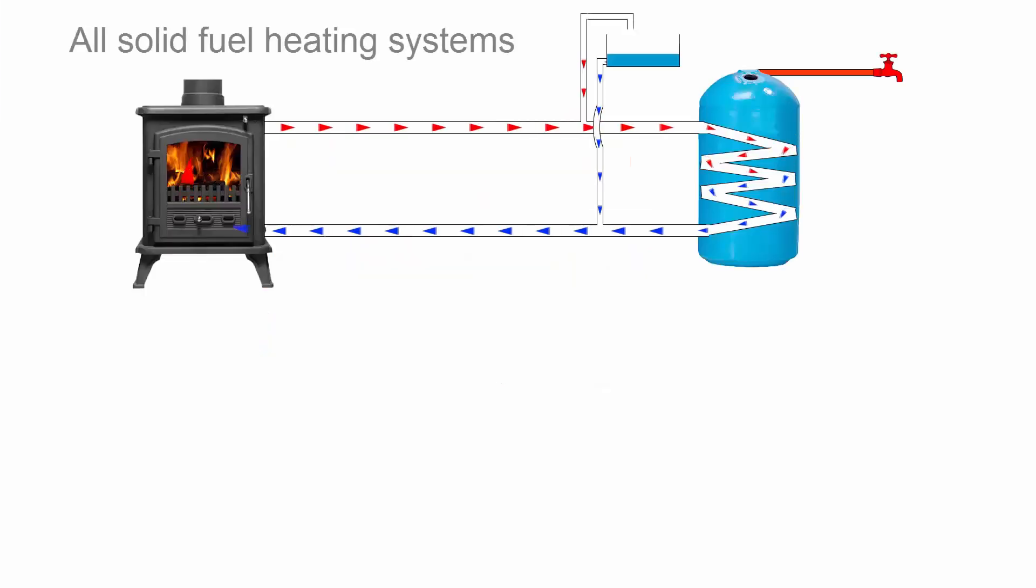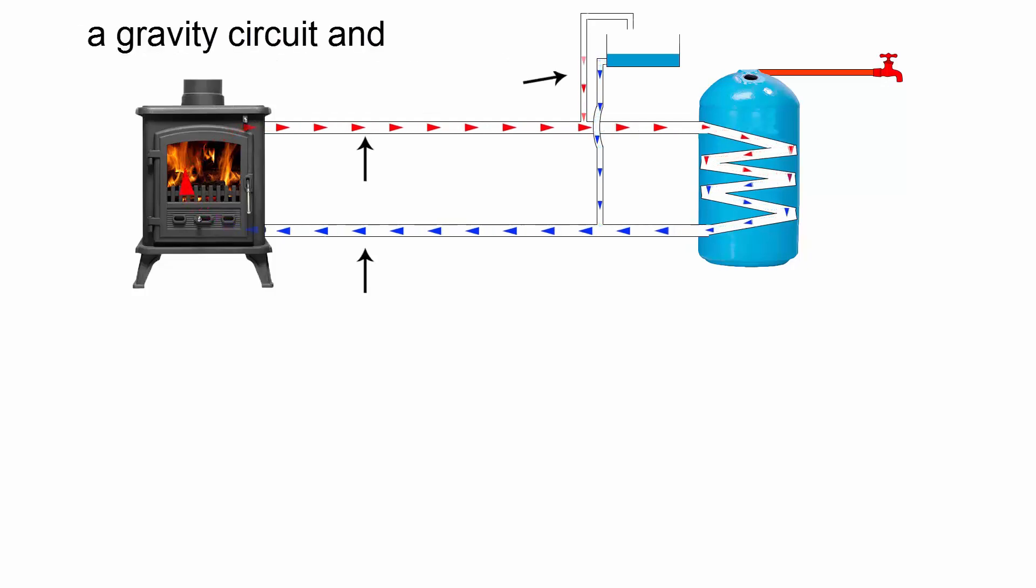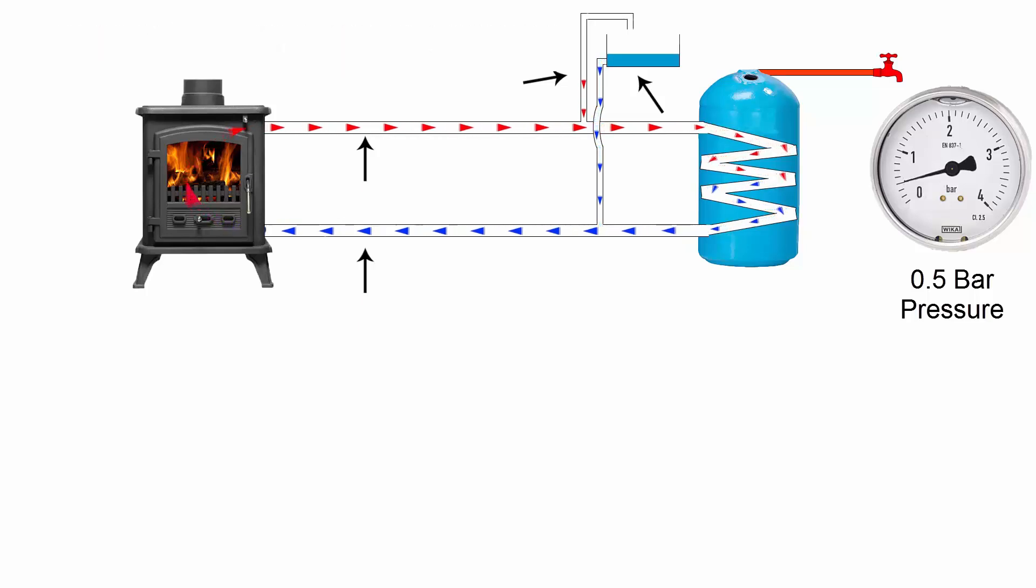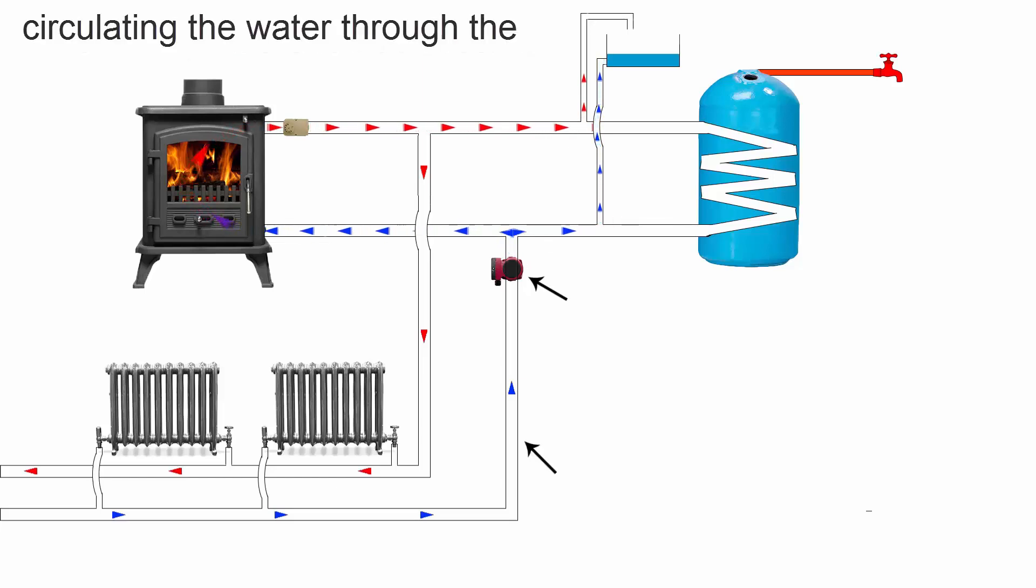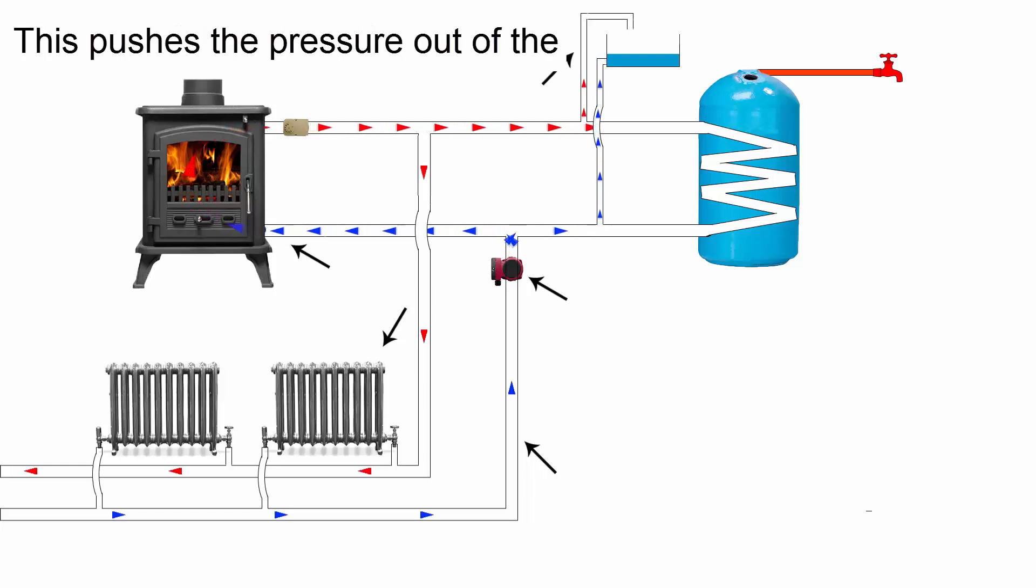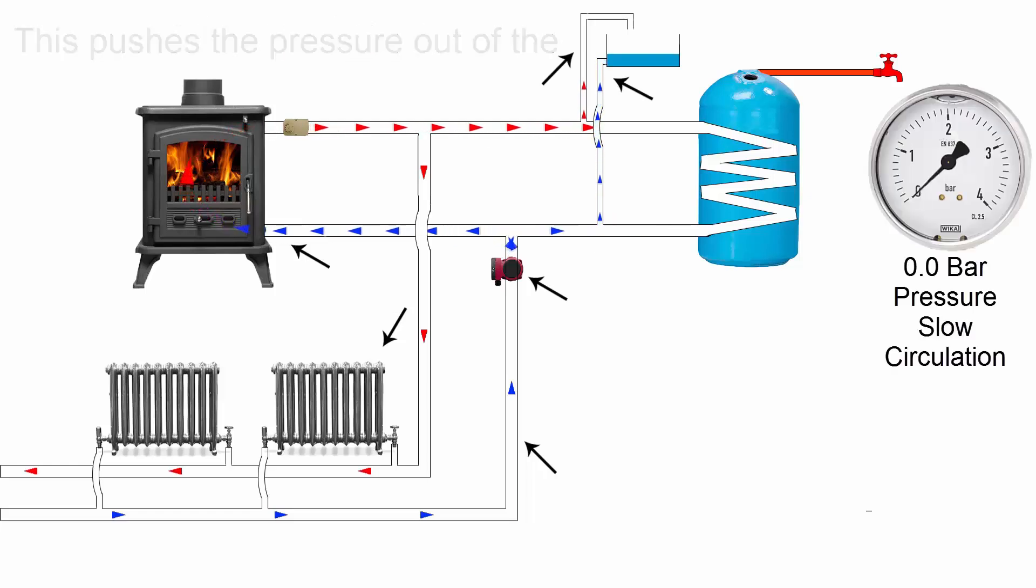Why Heat Hero? All solid fuel heating systems should have an open air vent, a gravity circuit, and approximately half a bar of water pressure. Before Heat Hero, the circulating pump was fitted on the radiator return, circulating the water through the stove towards the radiators and open air vent.